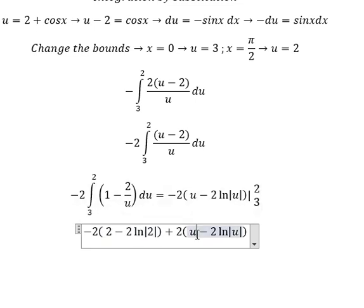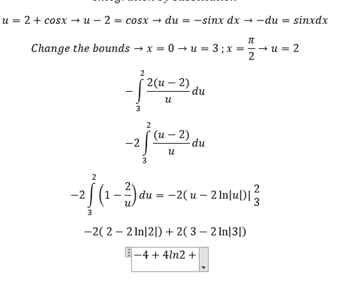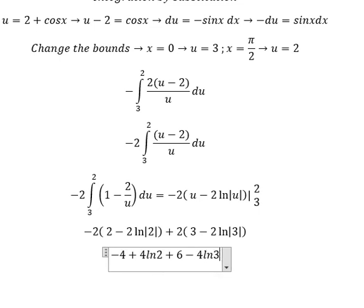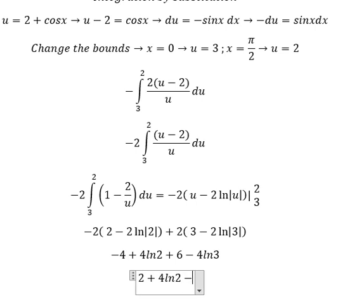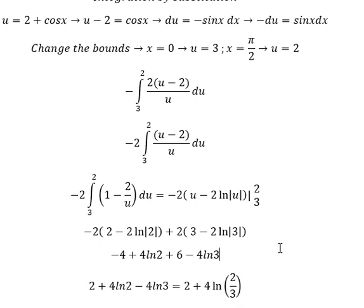Because negative times negative gives positive, we place two at the bottom and three at the top. We get negative four plus 4 ln(2) plus six minus 4 ln(3). Simplifying: six minus four equals two, so the final answer is 2 + 4 ln(2/3). This is the end — thank you for watching.